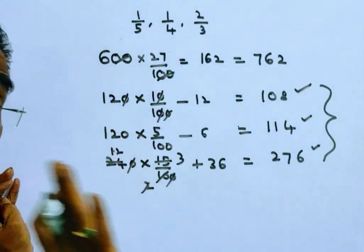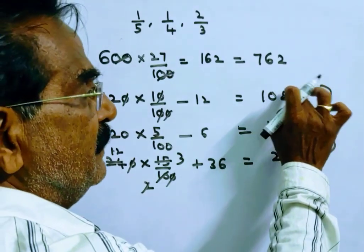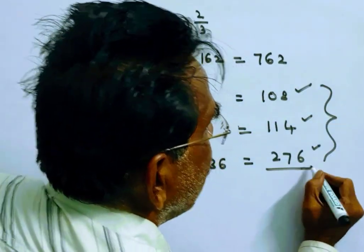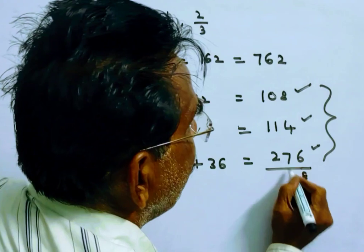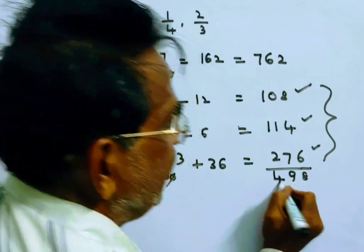He has to realize 762. He realized these 3 amounts: 108, 114, equals 498 he realized.